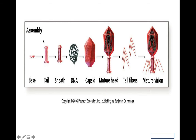This is showing assembly. The capsomers — the proteins that make up the capsid — assemble into the capsid. The proteins that make up the tail cylinder assemble, and the proteins that make up the tail fibers assemble. The capsids spontaneously package the pieces of DNA, and then the tail assembles onto the capsid. This is all done spontaneously — it's the craziest thing, absolutely wild.